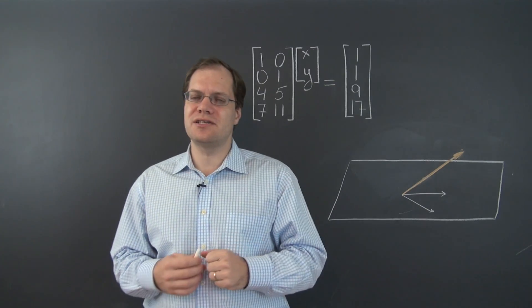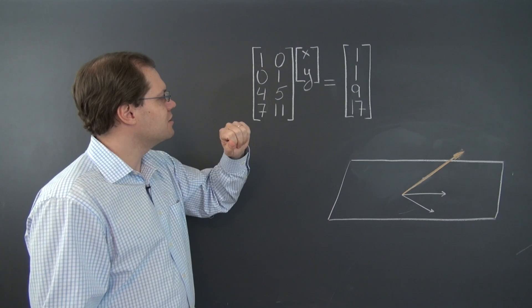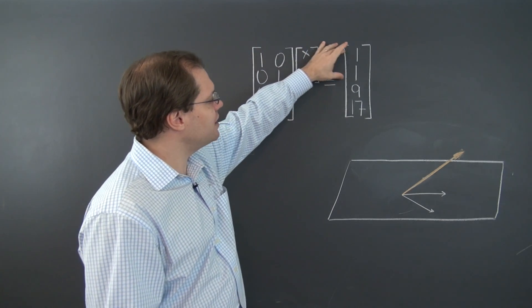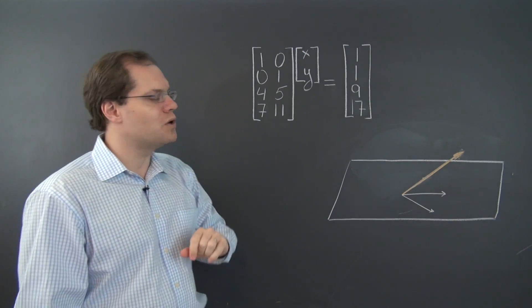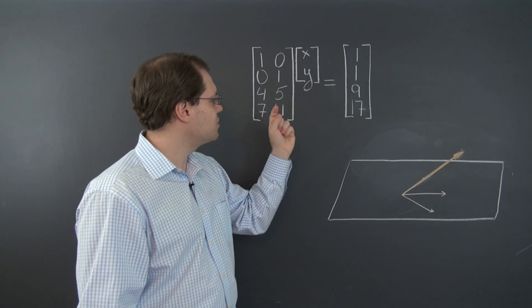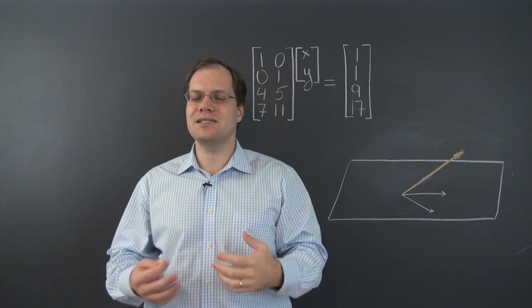The system is very similar to a system we considered before, but the system doesn't have a solution. That's very easy to see because the only possible x and y that satisfy the first two equations are 1 and 1, and these values of x and y satisfy the third equation but not the fourth equation. So the system doesn't have a solution.